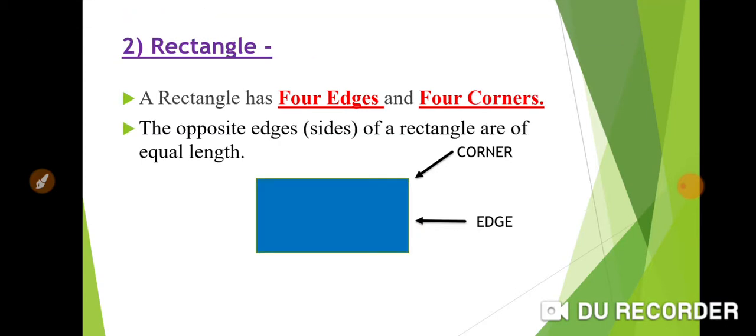Rectangle. A rectangle has four edges and four corners. The opposite edges, means sides, of a rectangle are of equal length. That you can see in this picture also.